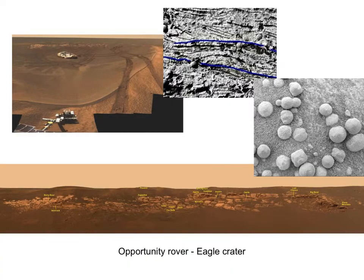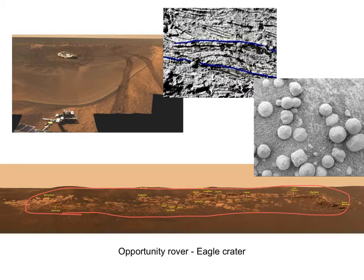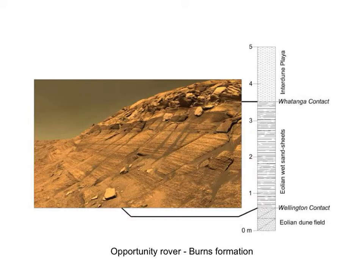Opportunity rover landed in a crater in Meridiani Planum — the Eagle Crater site — and had basically immediate success finding bedrock that were essentially sediments: layers of sedimentary rock in place, exposed in this impact crater. Later in the mission, you can see all of these sandstone layers and other sedimentary deposits that were laid down there — demonstrating that sedimentary rocks can indeed be formed on Mars.